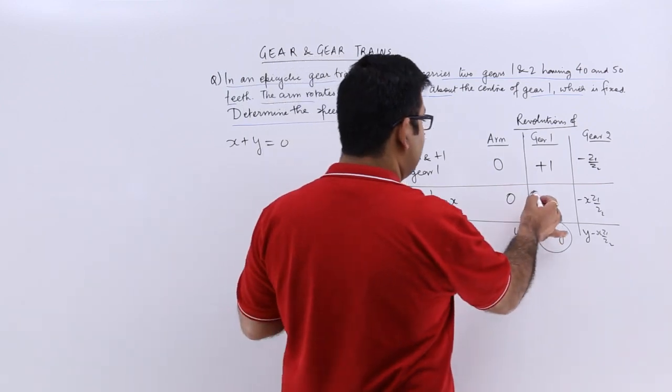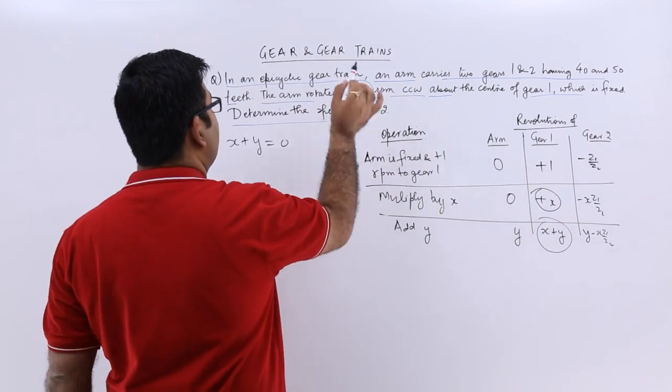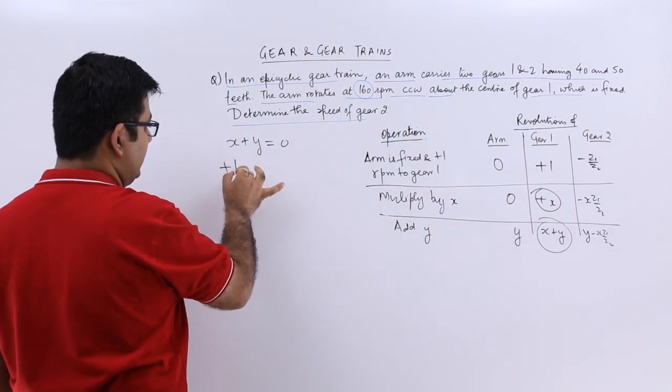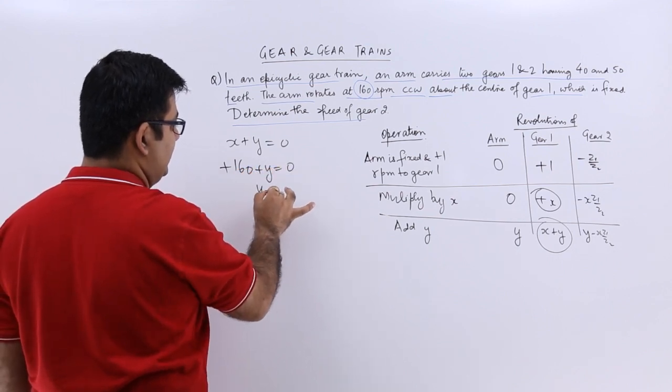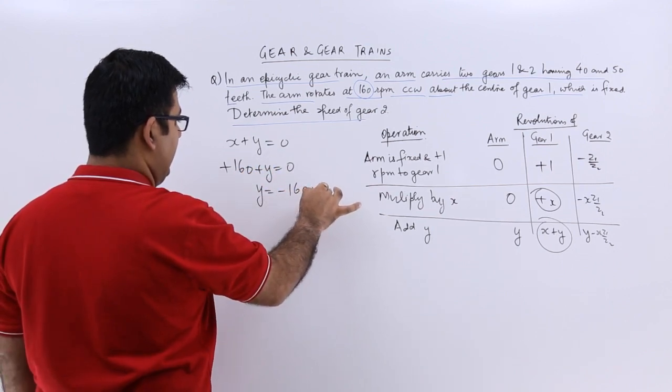Now what is x? x is the rpm of gear 1 which is 160. So I will say plus 160 plus y is equal to 0, which means y is equal to minus 160.